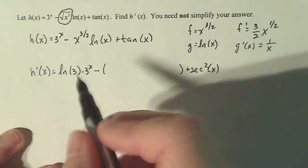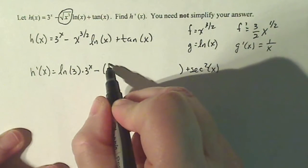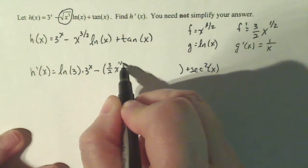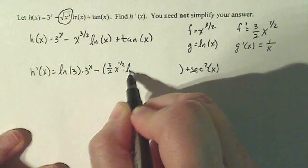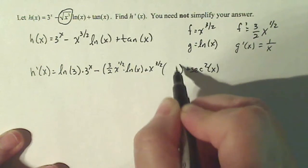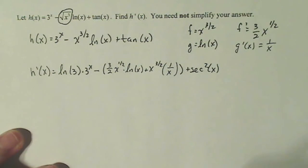Okay, so let's use the product rule. Derivative of the first function, which is f: three halves x to the one half times the second function. And since we're not simplifying, we can stop right there.